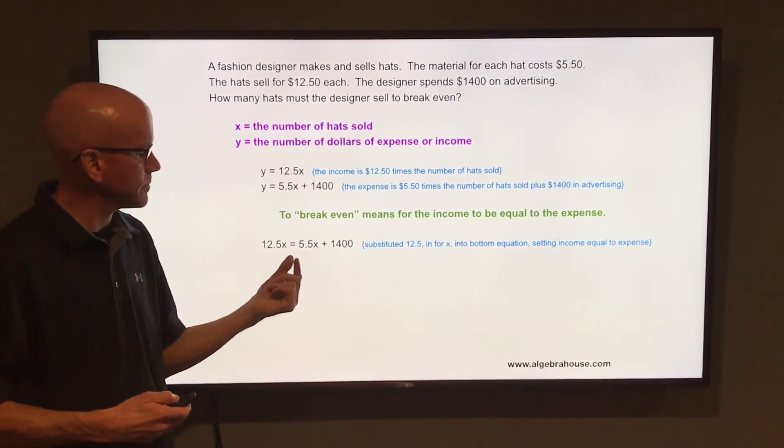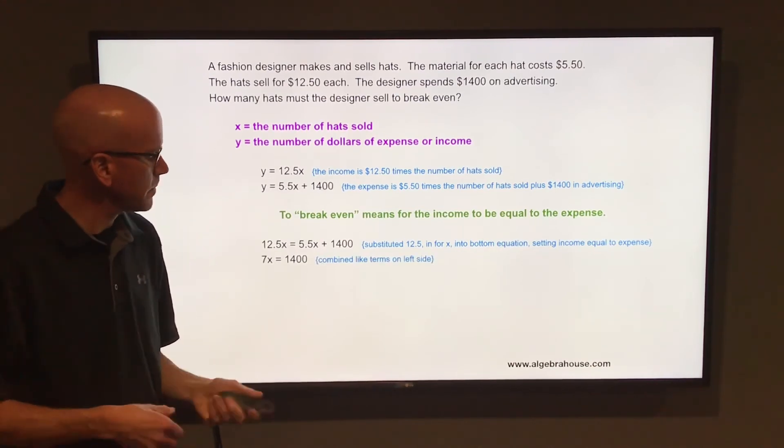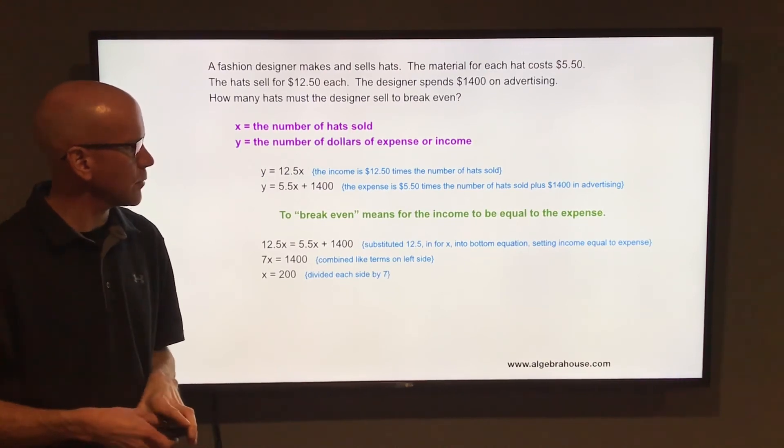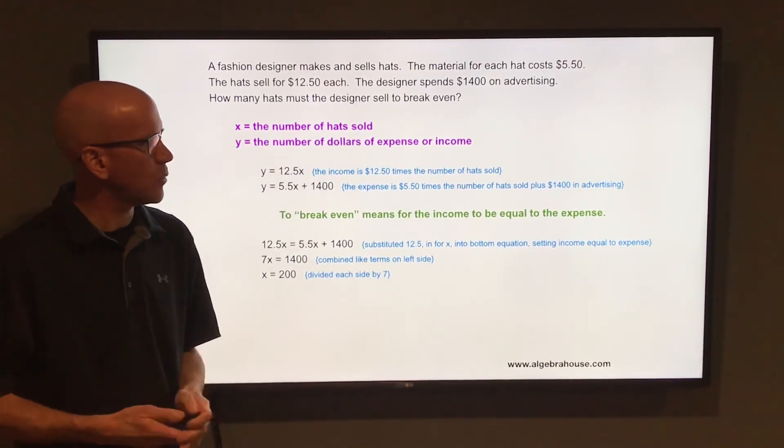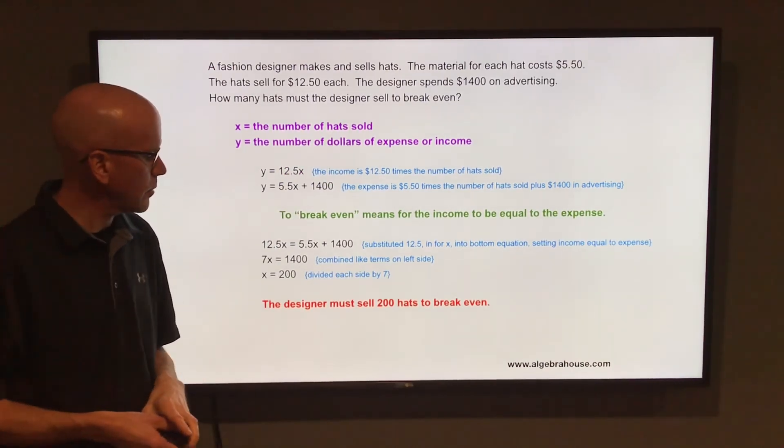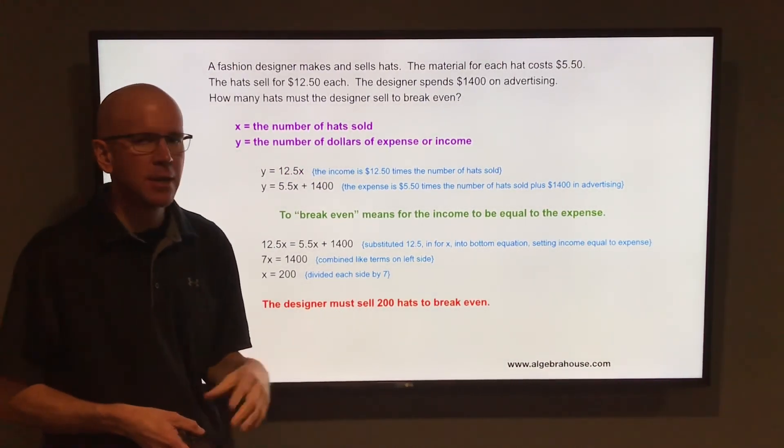So to solve that for X, subtract 5.5X from each side. When you do that, you get 7X equals $1,400, and divide each side by 7. X equals 200. Remember X is the number of hats sold, and we're looking for the number of hats the designer must sell to break even. Well, the answer to that question is 200 hats.